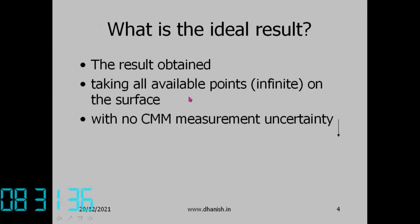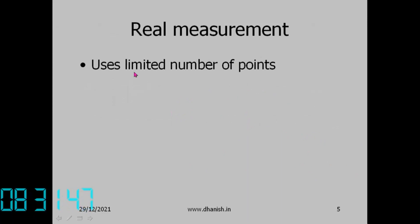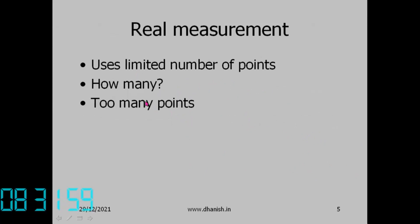In reality, you cannot take all available points and there will always be CMM uncertainty. So real measurement uses a limited number of points. Too many points takes more time, especially for a touch trigger probe where each touch-retract cycle takes time. After a certain number of points, more points give little additional change in result, so there is no need to take too many.